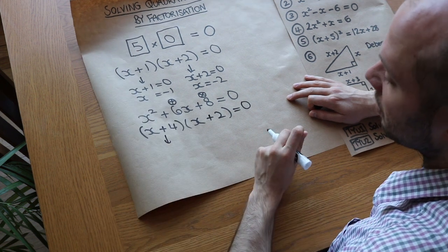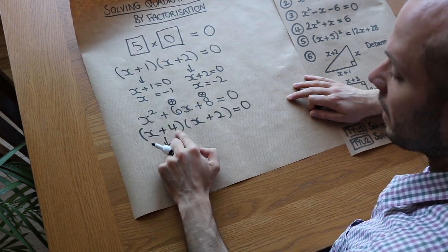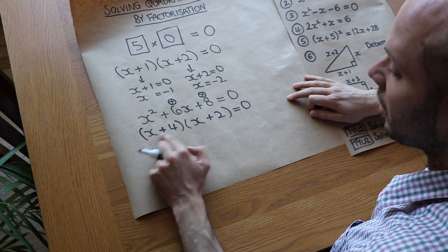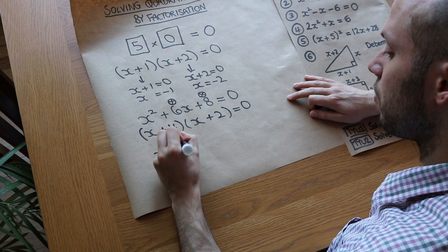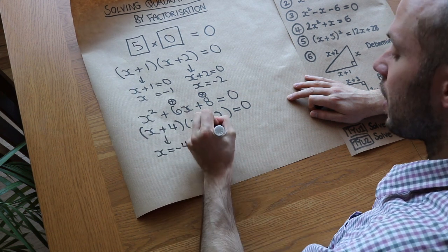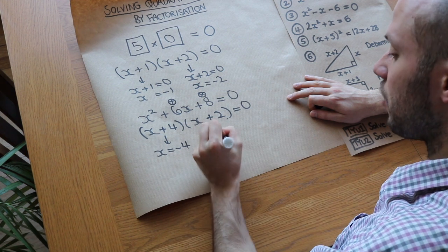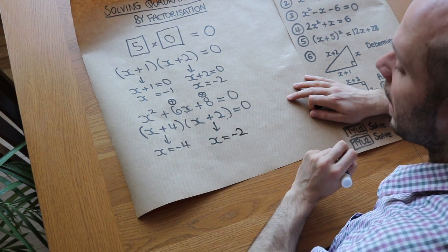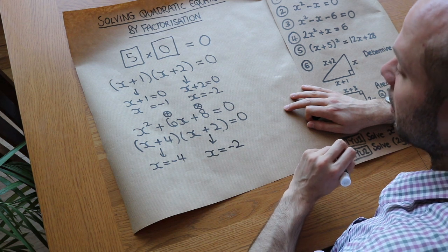Then we do a similar thing to before. What plus four gives you zero? If this bracket is zero, it's minus four. So x has got to be minus four, because minus four plus four is zero. And what plus two gives you zero? Well, it's minus two — minus two plus two gives you zero. And those are the solutions to this quadratic equation.